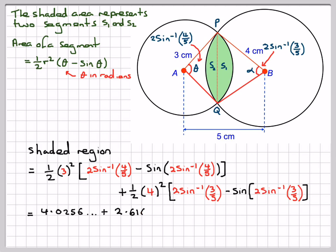Using our calculator in radian mode, we get 4.0256 for this part and 2.6162 for this part. Adding them together gives 6.64161, so the final answer is 6.64 centimeters squared.